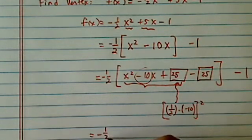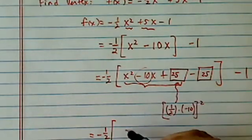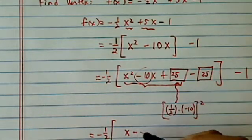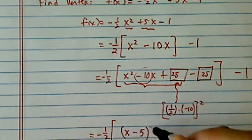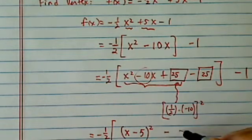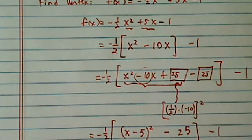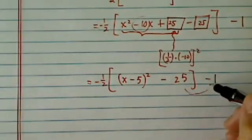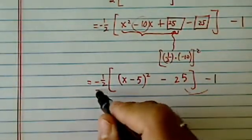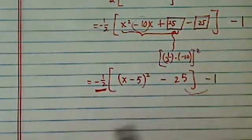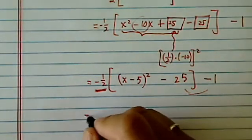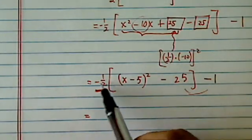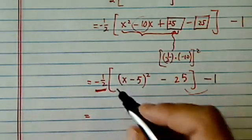Then I have minus half, and I'll factor the first three — I have a perfect square, minus five squared. Then I have minus 25, minus one. Now, this is the step where a lot of students say, "I'm just going to combine these two." No, you can't, because the multiplication supersedes the minus and the adding and subtraction. So you have to take care of the minus half in front of it first.